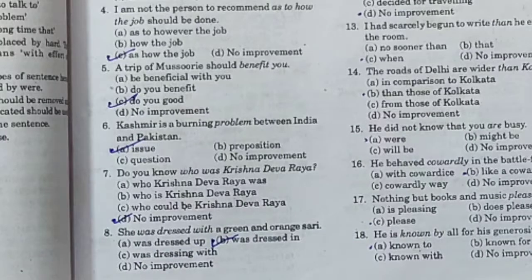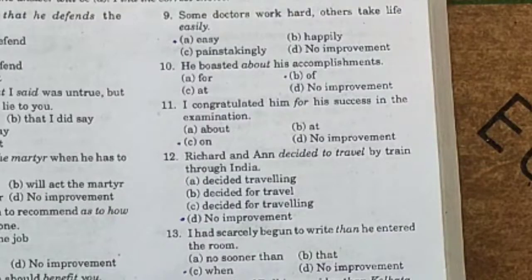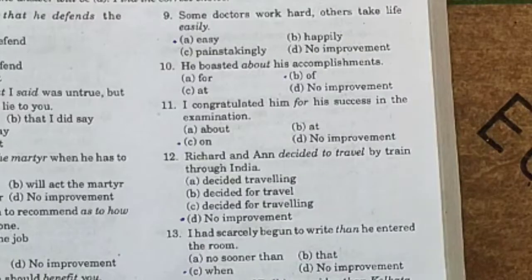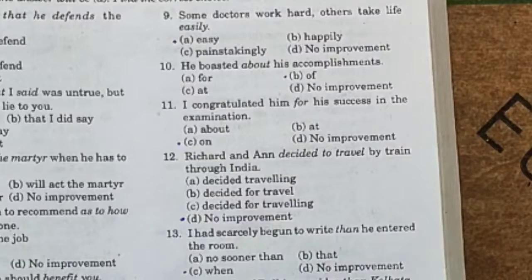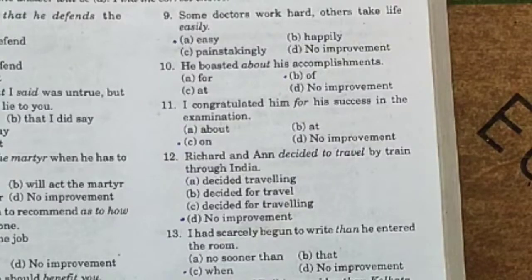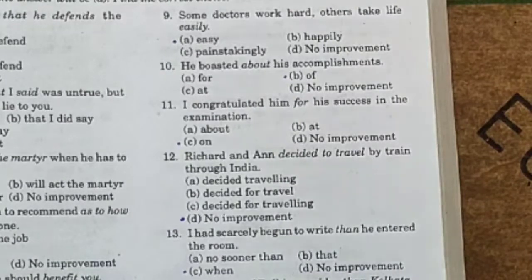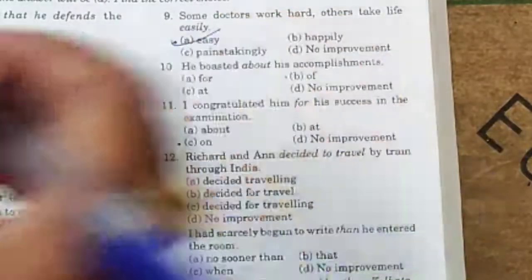Now sentence number 9: 'Some doctors work hard. Others take life easily.' Option A: easy. Option B: happily. Option C: painstakingly. Option D: no improvement. Improvement is required: 'easily' will be replaced by 'easy'. Others take life easy. So option A, easy, is the correct answer.